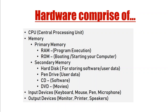So hardware basically comprises the CPU, which is the main computer, and the memory. There are two types of memory — never get confused about it. The first is primary memory and the second is secondary memory. I just spoke about secondary memory, and the memory I spoke about was the hard disk. So what exactly is primary memory? There are two types of primary memory: RAM and ROM.